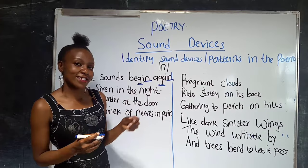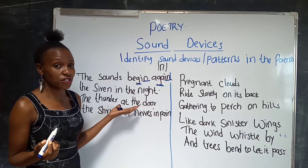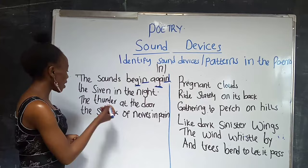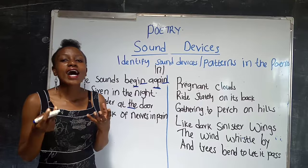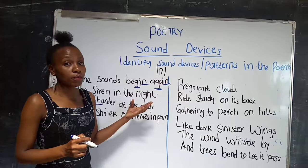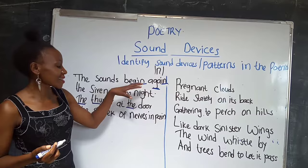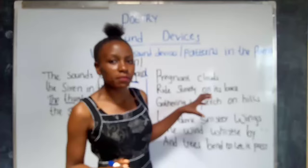We proceed to the next line: 'The siren in the night. The thunder at the door.' Here we have the TH sound repeated at the beginning of words, and since the sounds are occurring at the beginning of words, that is alliteration. The next line: 'The shriek of nerves in pain.' So in this poem we have consonance and alliteration.